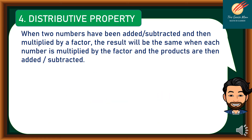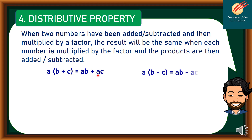Let's move on to the fourth property, which is the distributive property. When two numbers have been added or subtracted, then multiplied by a factor, the result is the same as when each number is multiplied by the factor and the products are then added or subtracted. In symbols: a times (b plus c) equals ab plus ac. Similarly, a times (b minus c) equals ab minus ac.